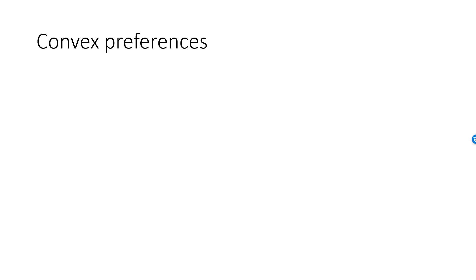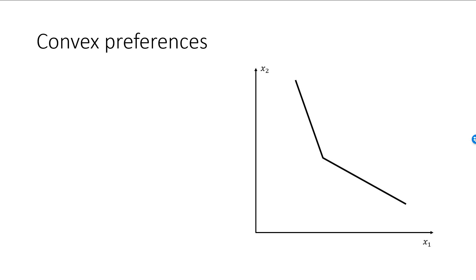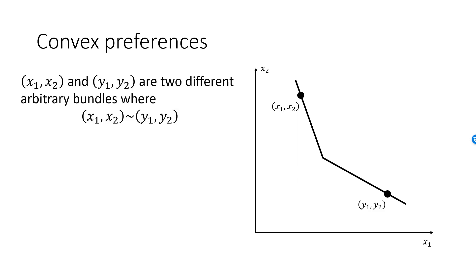Strict monotonicity and total order are assumed in this lecture. Let's begin with an indifference curve consisting of two line segments. We have two arbitrary bundles on this indifference curve: X1, X2 and Y1, Y2. Let's draw a straight blue line between these two bundles and consider any bundle on this blue line, denoted by Z1, Z2. Bundles on the blue line are combinations of the X bundle and the Y bundle.